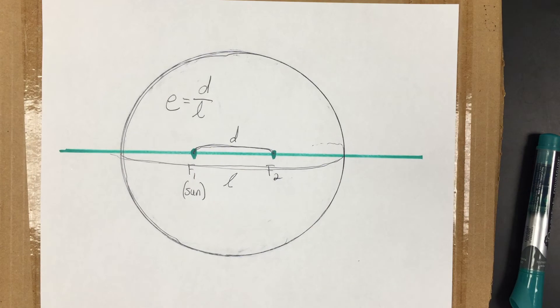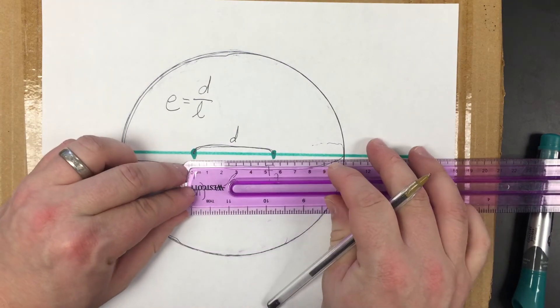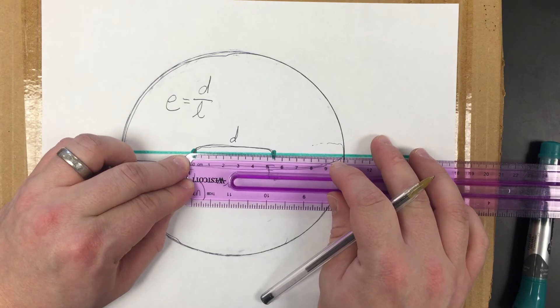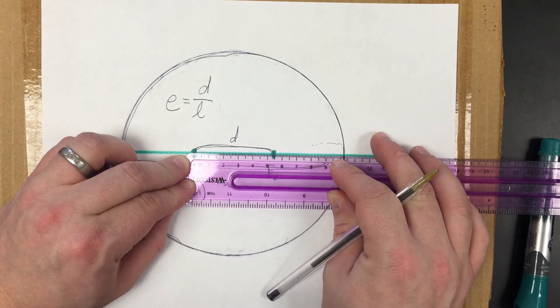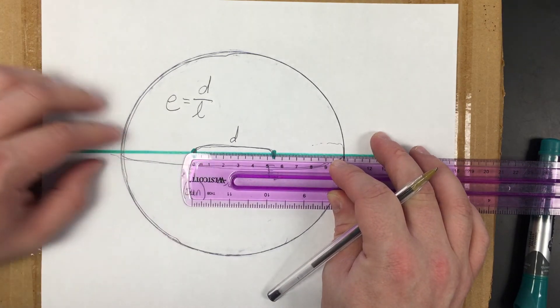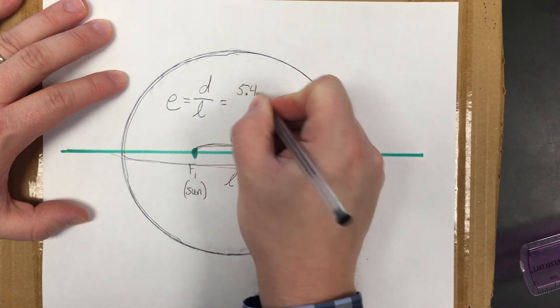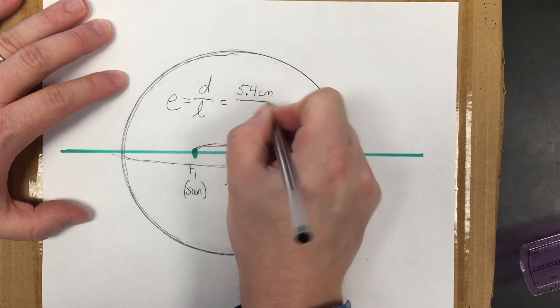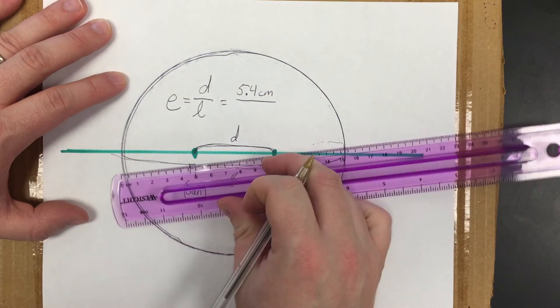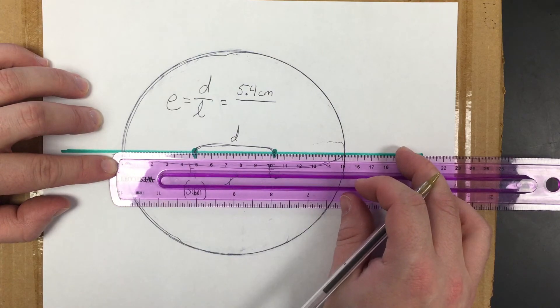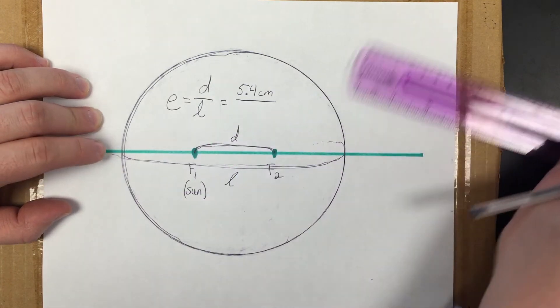So I'm going to take my ruler and with that ruler I'm going to measure in centimeters my distance between the foci to the nearest tenth because that's what this ruler does and I see this as 5.4. So the length of the major axis I get as 15.1 centimeters.